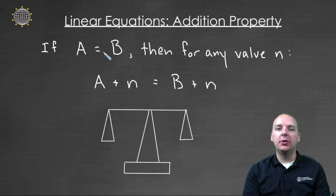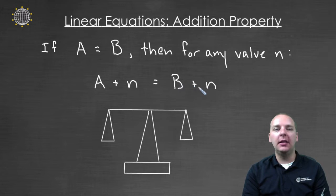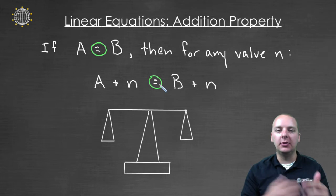if two expressions are equal to each other, if A equals B, then for any value N, if you add N to the left hand side A, and also add N to the left hand side B, the equality is maintained. Right? So the sides are still equal.